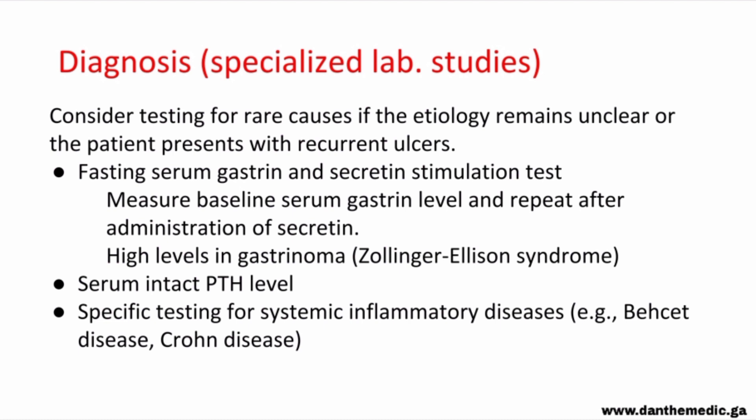For specialized lab studies, when etiology remains unclear or ulcers recur, we consider fasting serum gastrin and secretin stimulation test — measuring baseline serum gastrin and repeating after secretin administration; high gastrin levels confirm Zollinger-Ellison syndrome. We can also measure serum intact parathyroid hormone level, since hyperparathyroidism is a rare cause. Specific tests for systemic inflammatory diseases like Behçet's disease and Crohn's disease can also be performed.